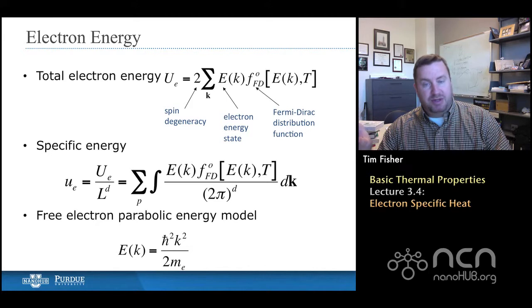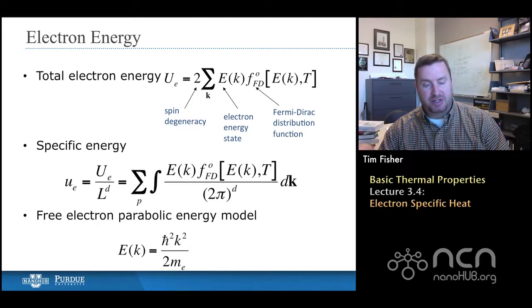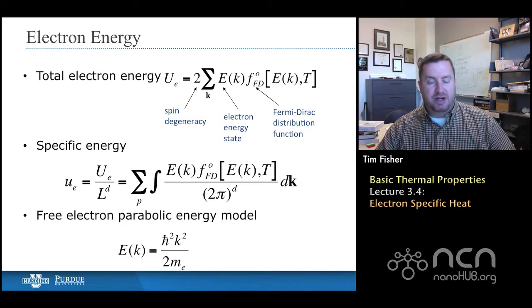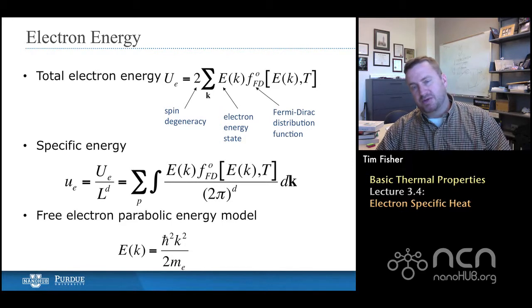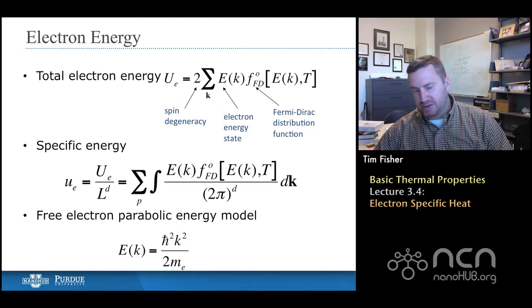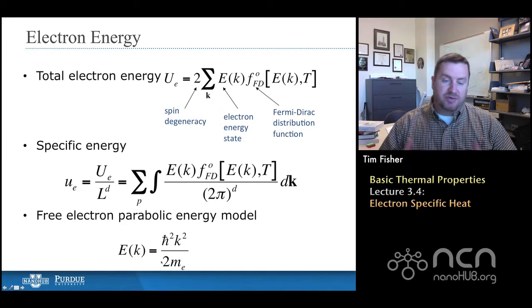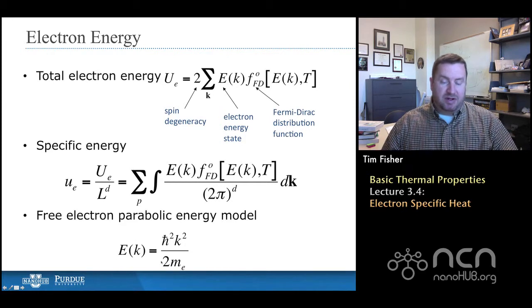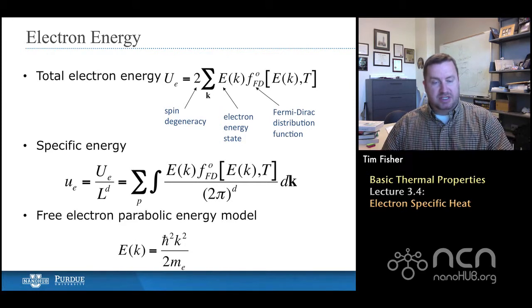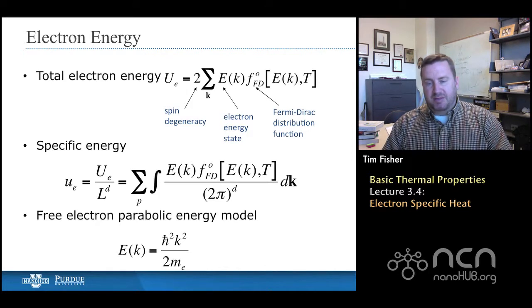We will, throughout this analysis, use the free electron parabolic energy model. That means that the electron energy is proportional to the wave vector squared, the magnitude of the wave vector squared. And we'll use the electron mass, M sub E, although if we did this for a different kind of electronic material, such as a semiconductor, then we would replace that with the effective mass, which is usually symbolized with an M star.